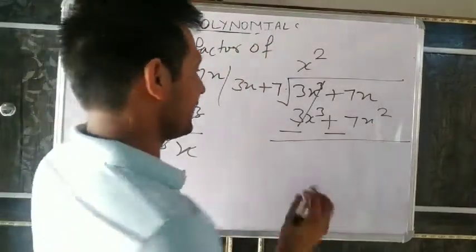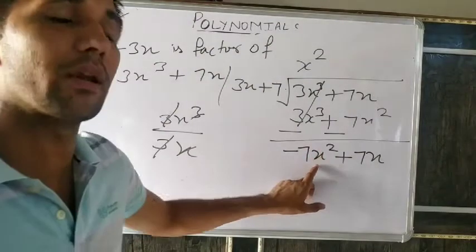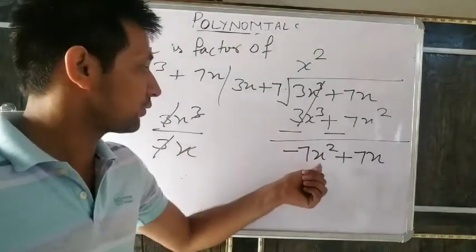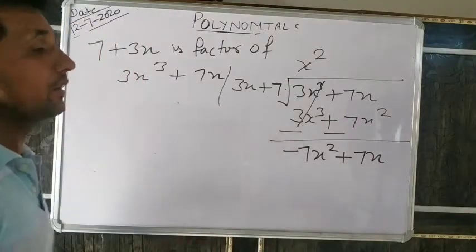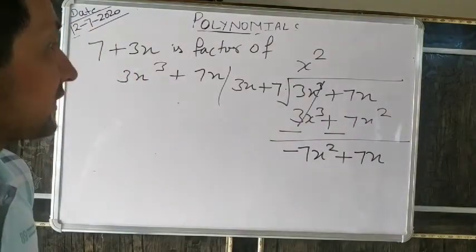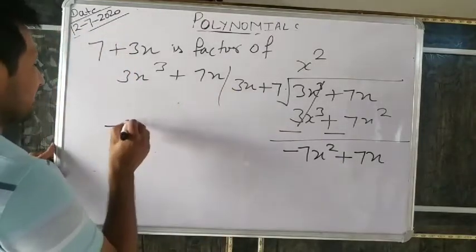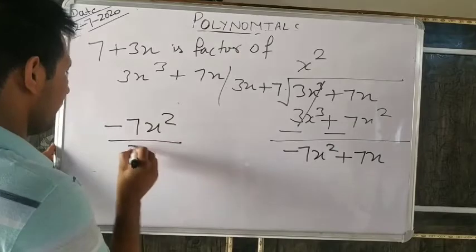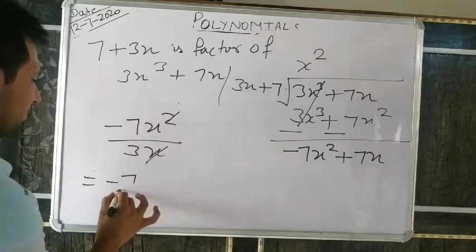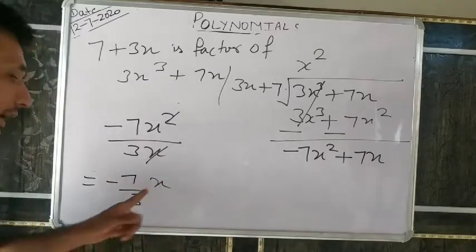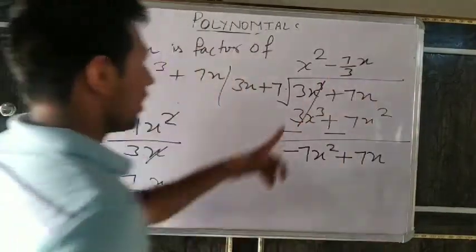Always write in decreasing order — so write −7x² first. Now divide: −7x² divided by 3x. Can we divide 7 by 3? No — so we write −7/3 × x as the quotient term. Multiply −7x/3 by (3x+7): −7x/3 times 3x gives −7x² (negative × positive = negative), and −7x/3 times 7 gives −49/3 × x.